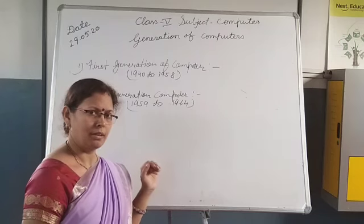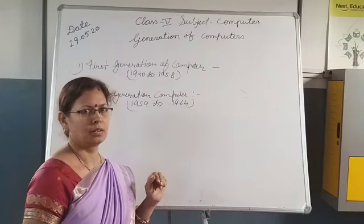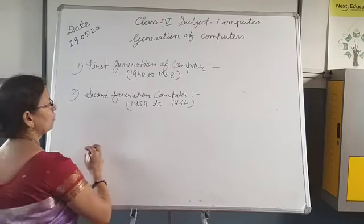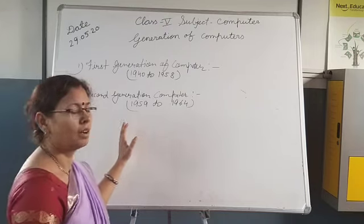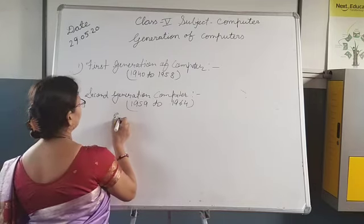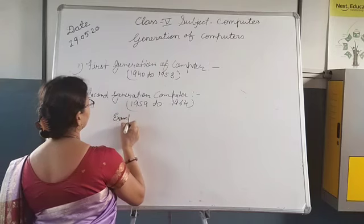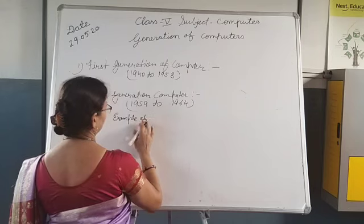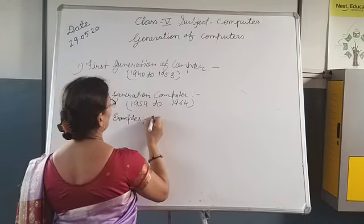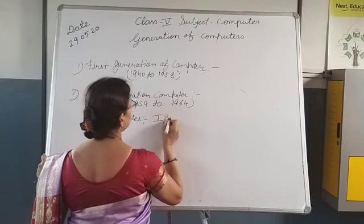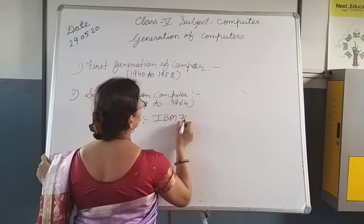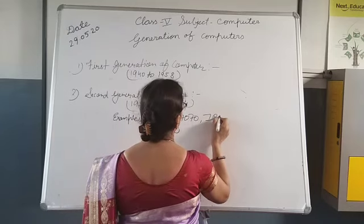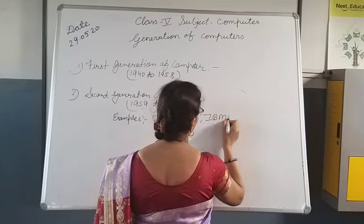In this generation, high-level languages like COBOL and BASIC were used. Examples of second generation computers include IBM 707 and IBM 1400.